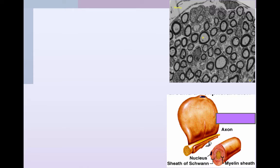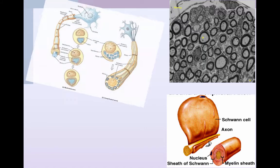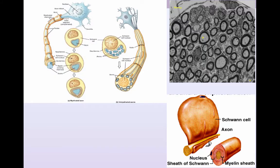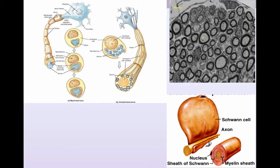The analogous cell in the peripheral nervous system is the Schwann cell, also mentioned in the previous video. The Schwann cell wraps around and around the axon, giving us concentric layers of myelin. Here you can see a multipolar neuron which has a myelinated axon, and it takes a number of Schwann cells to myelinate an entire axon.